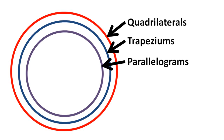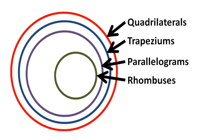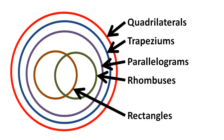Taking it further, parallelograms are a subset of trapeziums — all parallelograms are trapeziums. Similarly, all rhombuses are parallelograms, and all rectangles are also parallelograms. The rhombuses are one subset of parallelograms and the rectangles are another subset of parallelograms. The area of intersection between rhombuses and rectangles — that is, rhombuses which are also rectangles — are the squares.